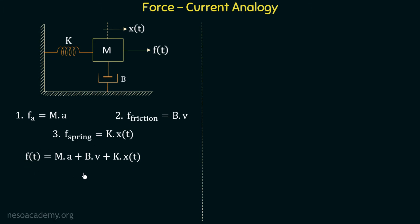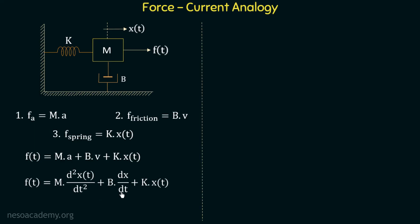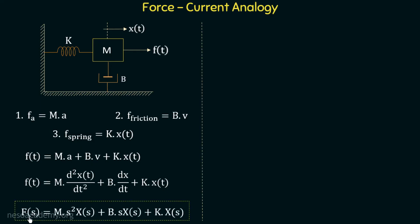We can rewrite this equation as F = M·(d²x/dt²) + b·(dx/dt) + k·x(t). Applying the Laplace transform, we have F = M·s²X + b·sX + k·X. This is the same equilibrium equation discussed in the previous lecture.